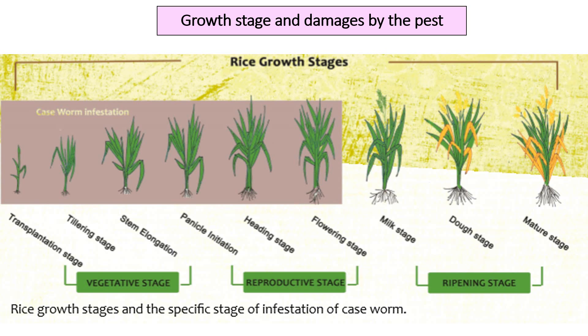Growth stage and damages by the pest. As already mentioned, the rice case worm infestation occurs during the vegetative and reproductive stages.